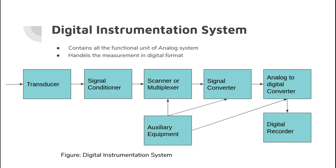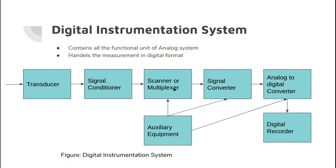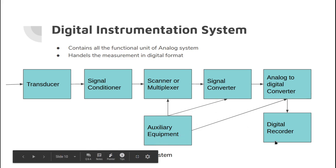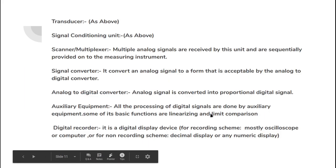In the block diagram of the digital instrumentation system, we have the transducer as before, the signal conditioner as before, and the additional components include: a scanner or multiplexer, a signal converter, an analog-to-digital signal converter, auxiliary equipment, and a digital recorder. The digital recorder corresponds to the data presentation element in the analog system.